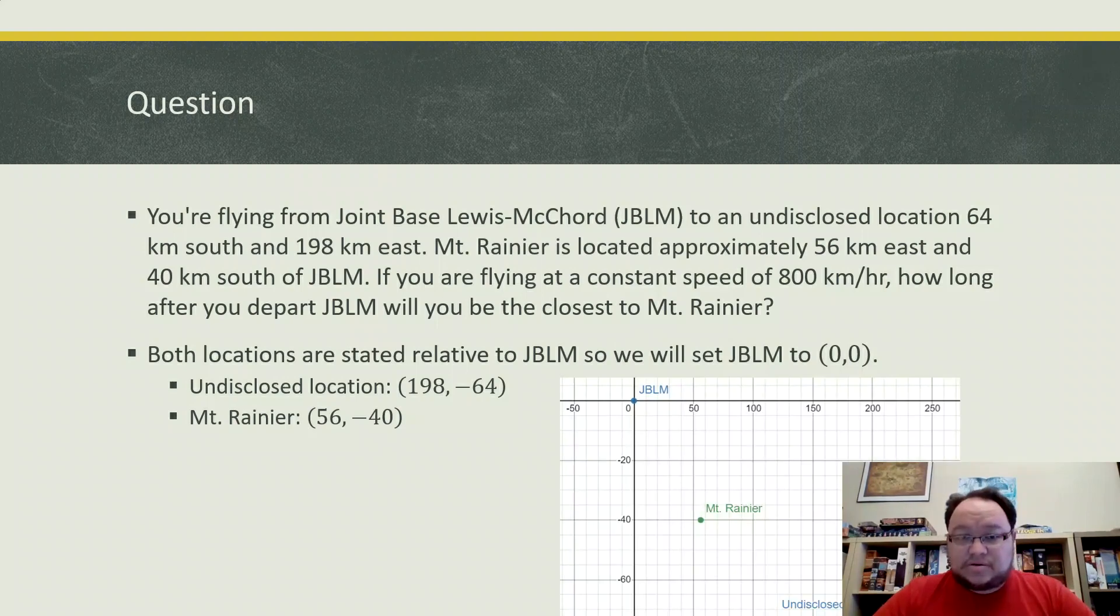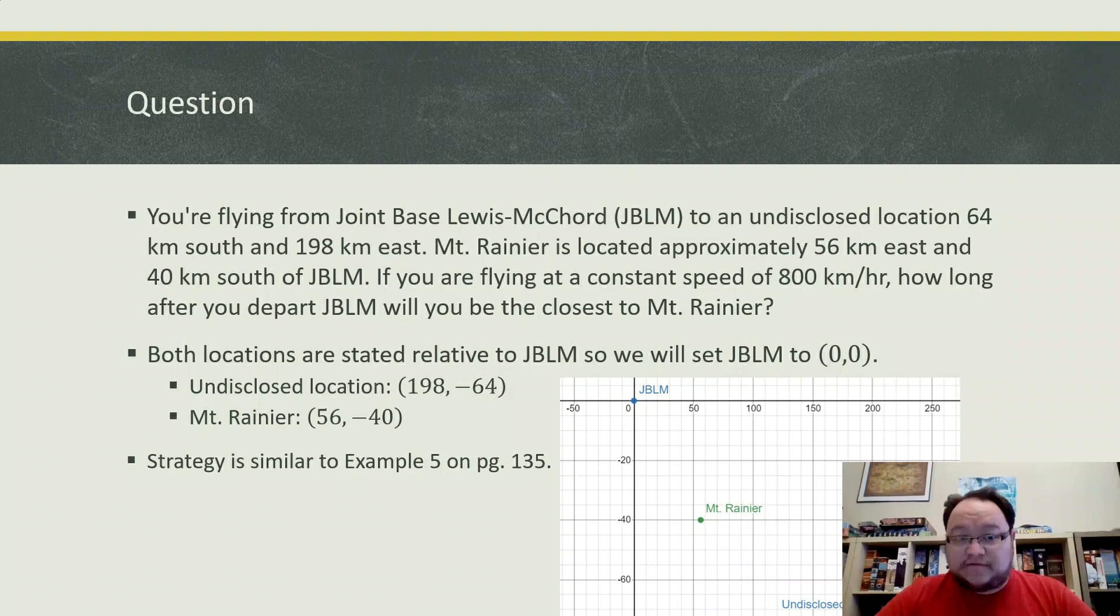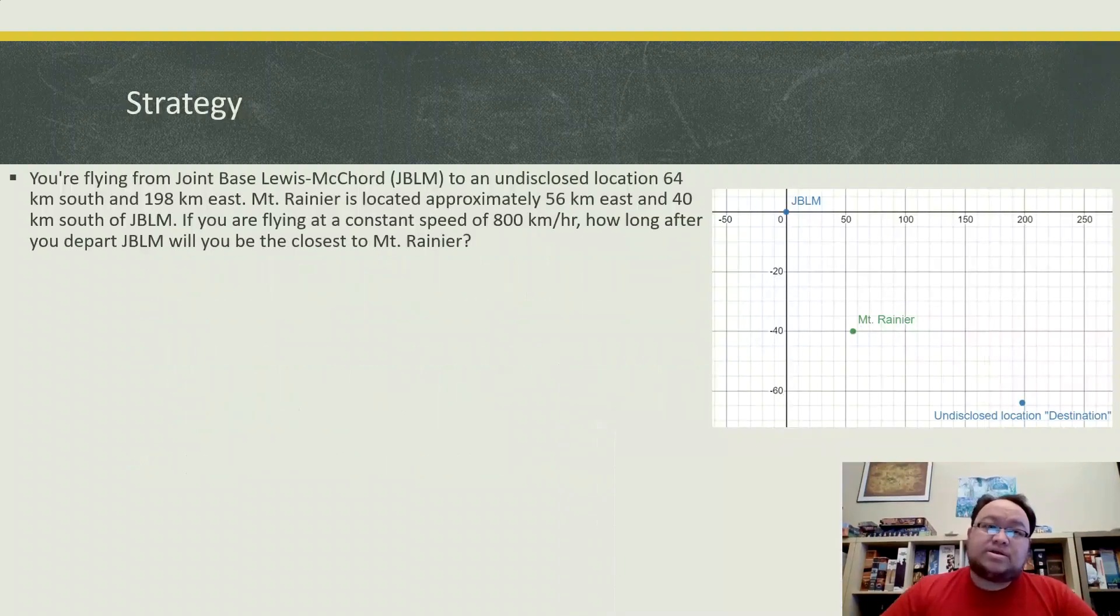So it would look like this. We are going to be flying between these two blue coordinates and we want to know how far into that flight are we going to be closest to the green dot there. The strategy for this is very similar to example 5 which is on page 135 of the textbook. Let's go ahead and talk about the strategy first.